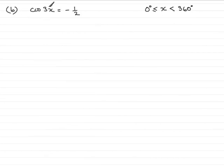Now in this question, we're asked to solve cosine 3x equals minus a half, where x is greater than or equal to zero degrees but less than 360 degrees.